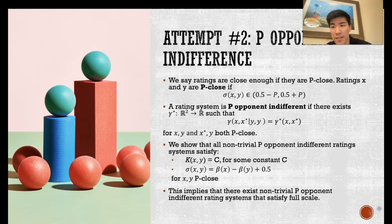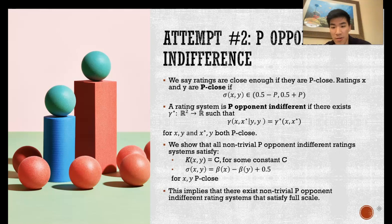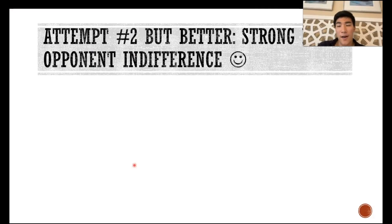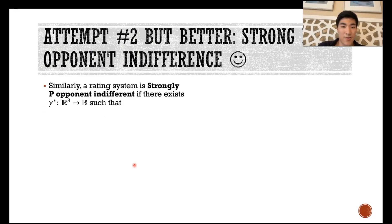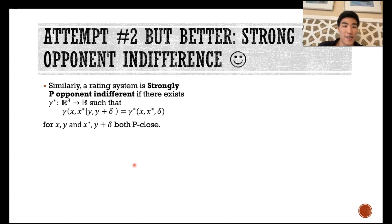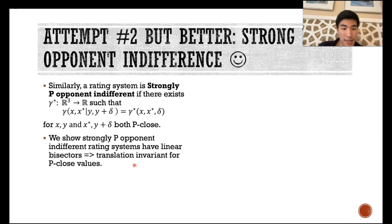We show very similar results as before — a constant K function and a separable scale curve — but only when X and Y are P-close. These results imply that there exist P-opponent indifferent rating systems that satisfy full scale. You can have a bisector that's increasing and linear, then bound the scale curve so that values greater than 1 equal 1 and values less than 0 equal 0. That would be P-opponent indifferent and also satisfy full scale. We can also apply the strong modifier to get strong P-opponent indifference, with a similar definition but only when parameters are P-close. We again show that the bisector must be linear, implying translation invariance for P-close values.